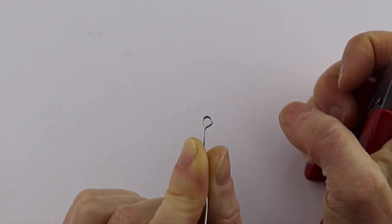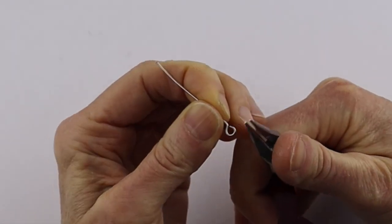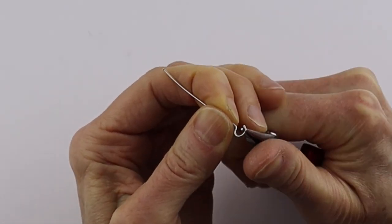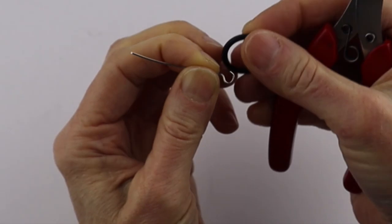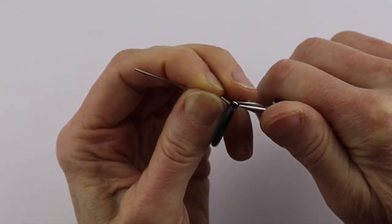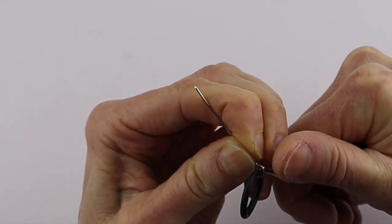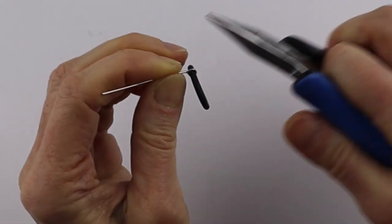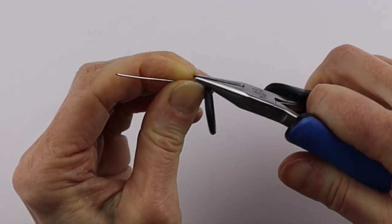Then bend this back so it has that configuration, open it up, put the O-ring in there, and then close it up. If it's easier, use your flat pliers to close it up.